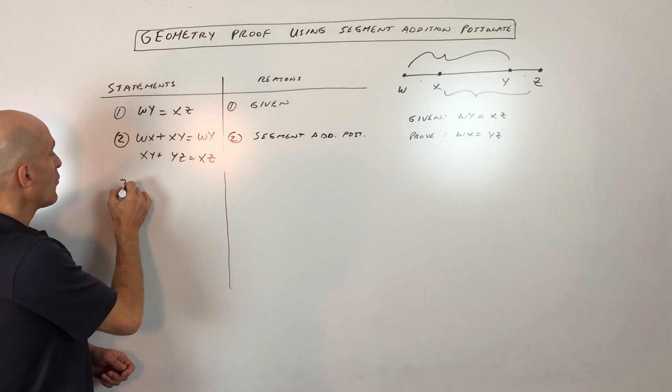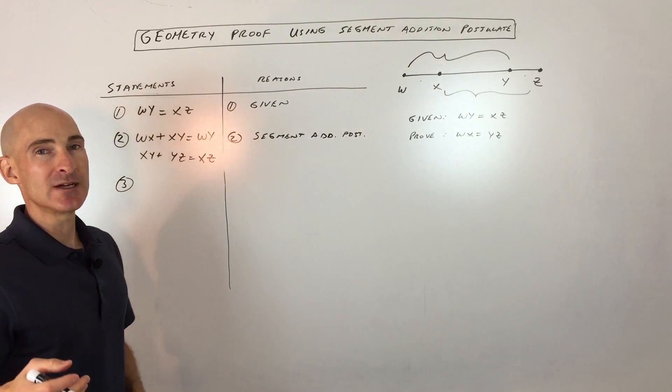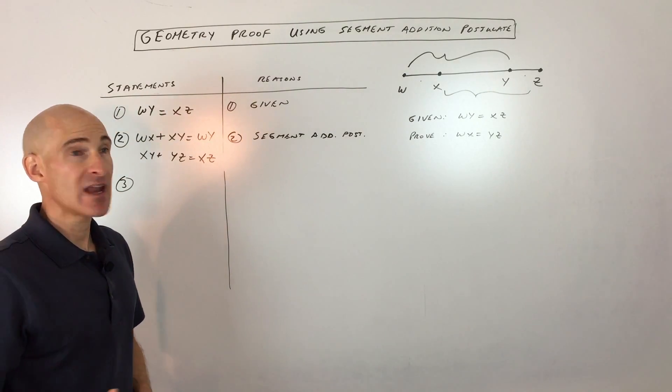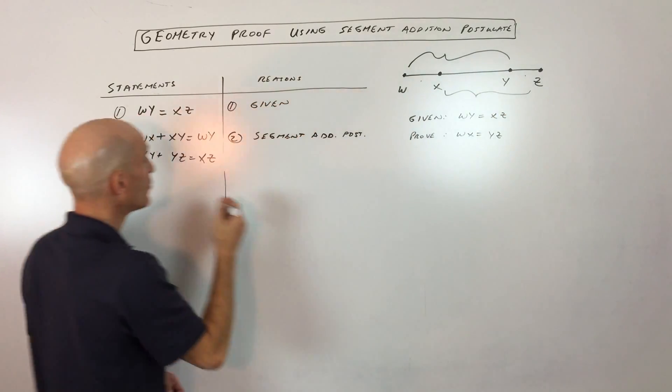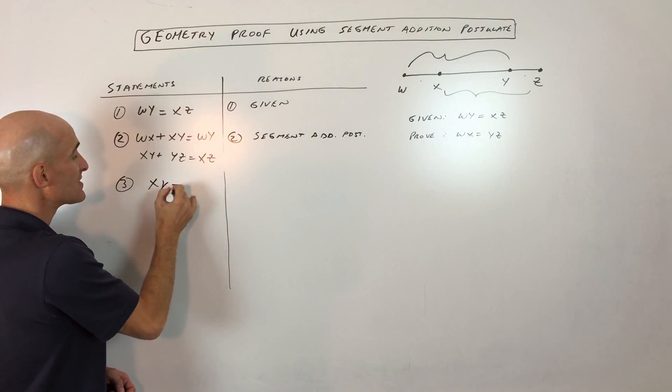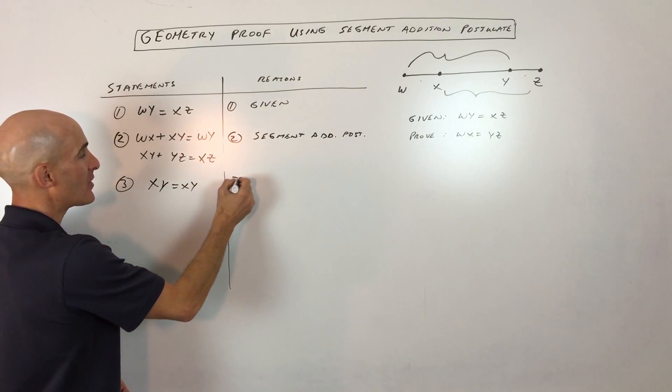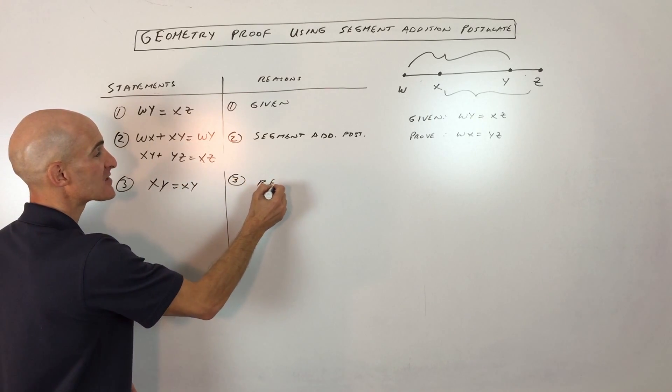Now, step number three, what I'm going to do, and this might seem a little bit obvious, but it's good to state it anyways, and that's that XY, segment XY, is equal to segment XY. And how do I know that? Well, that's called the reflexive property.